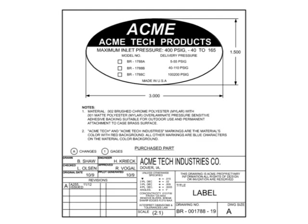Another type of detail drawing is the purchase part or procurement drawing. This type of drawing details all the information required to buy a stock part off the shelf. It typically only shows information useful to the purchaser to detail the performance or configuration of the item required. These characteristics are typically called the form, fit, and function of the part. It's up to the manufacturer to develop detail machine or casting drawings that conform to the purchase part drawing requirements.